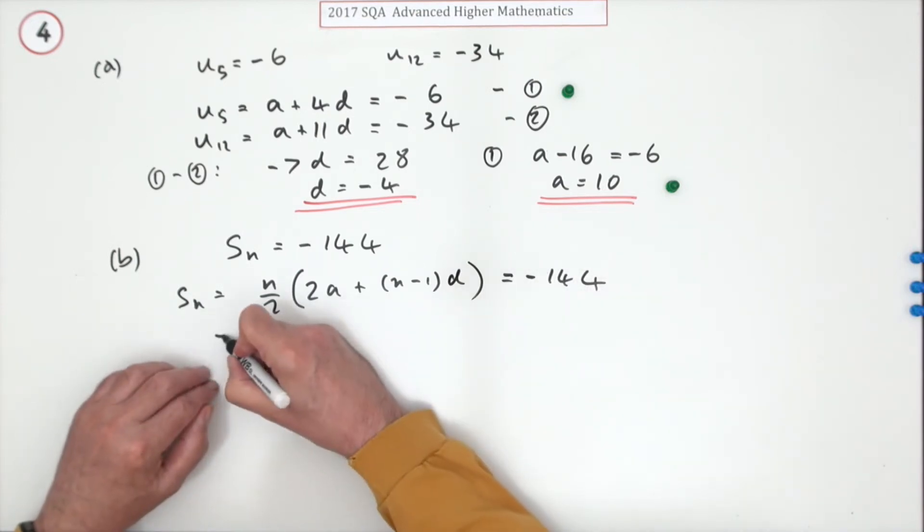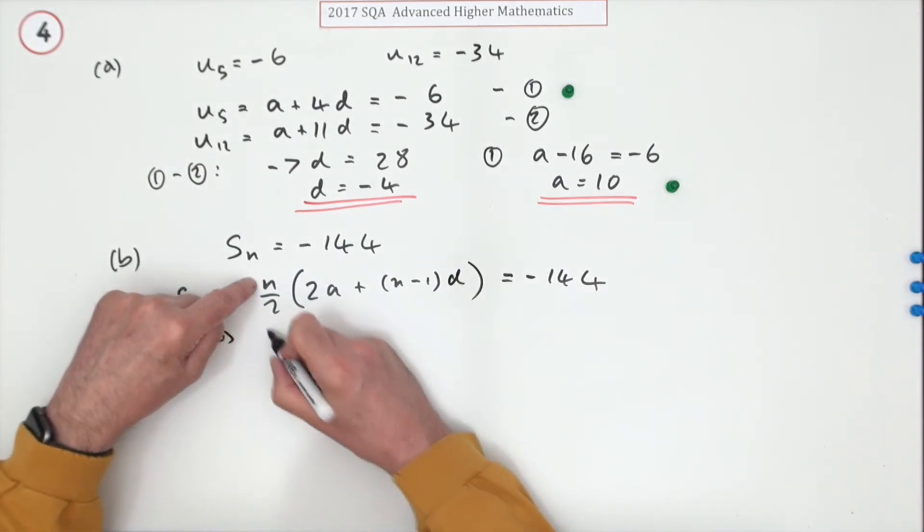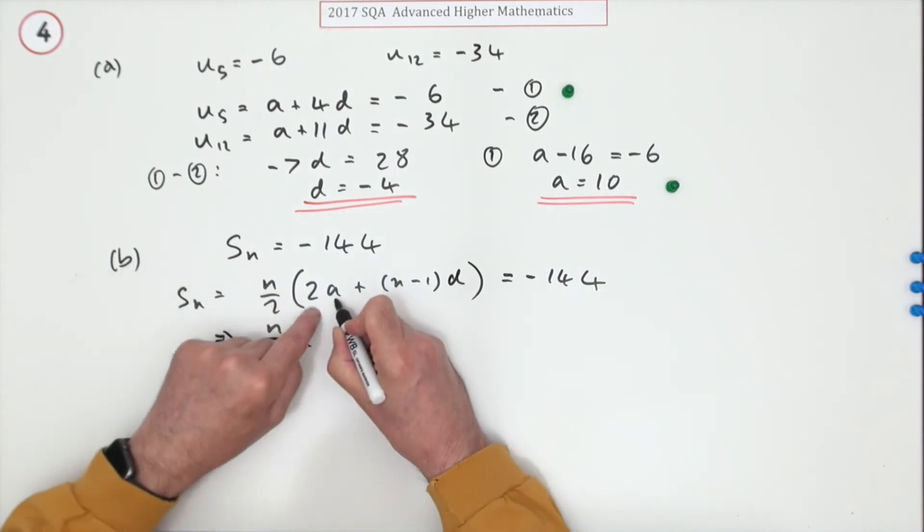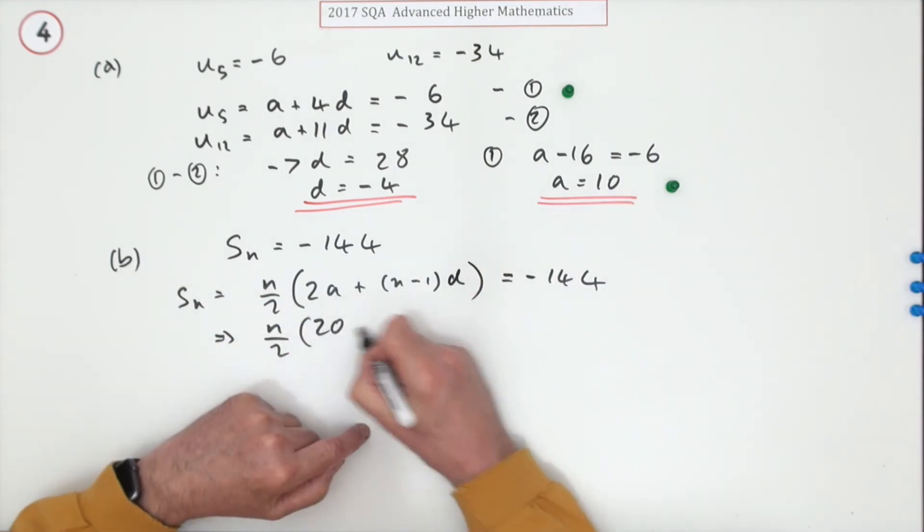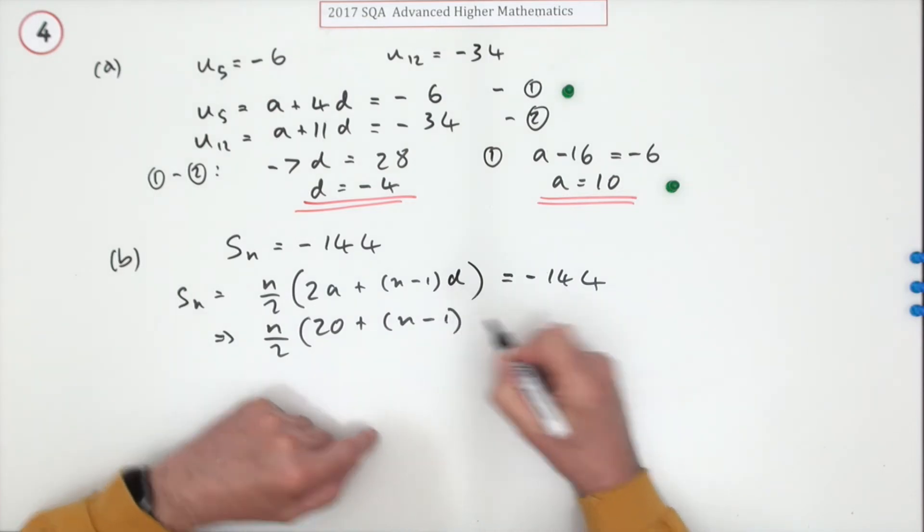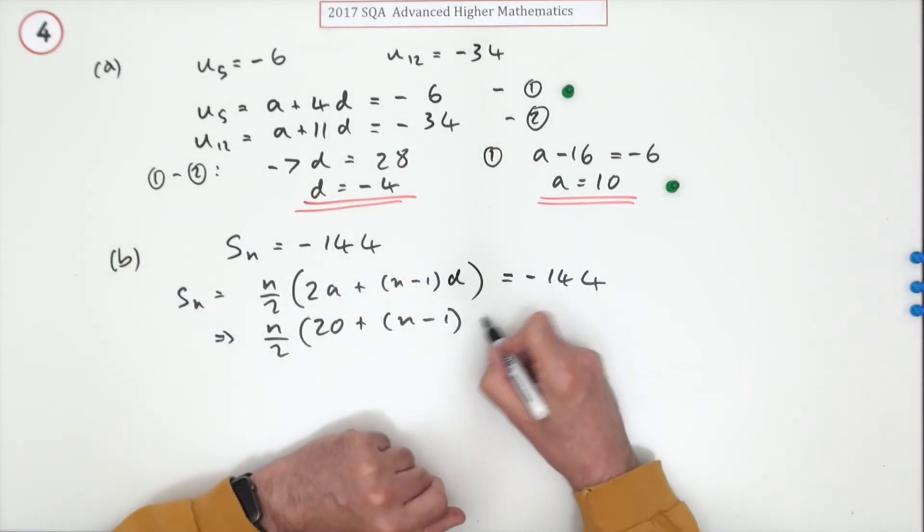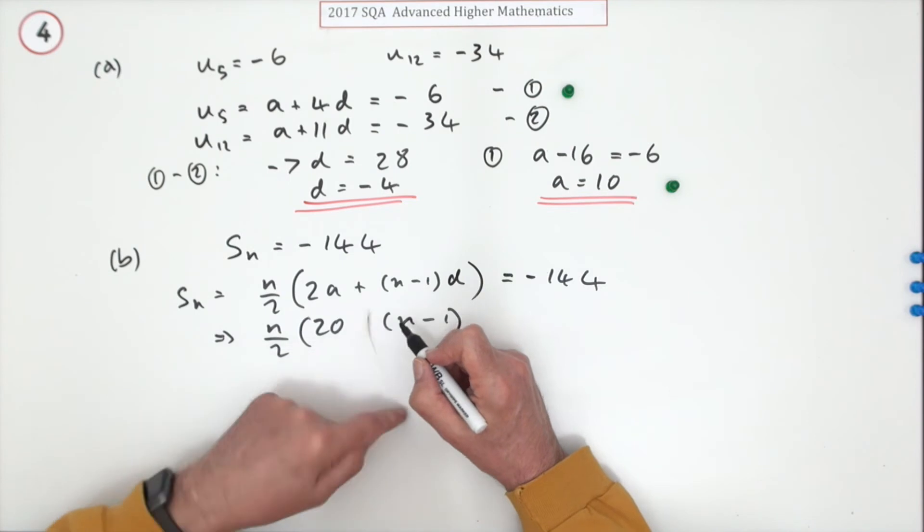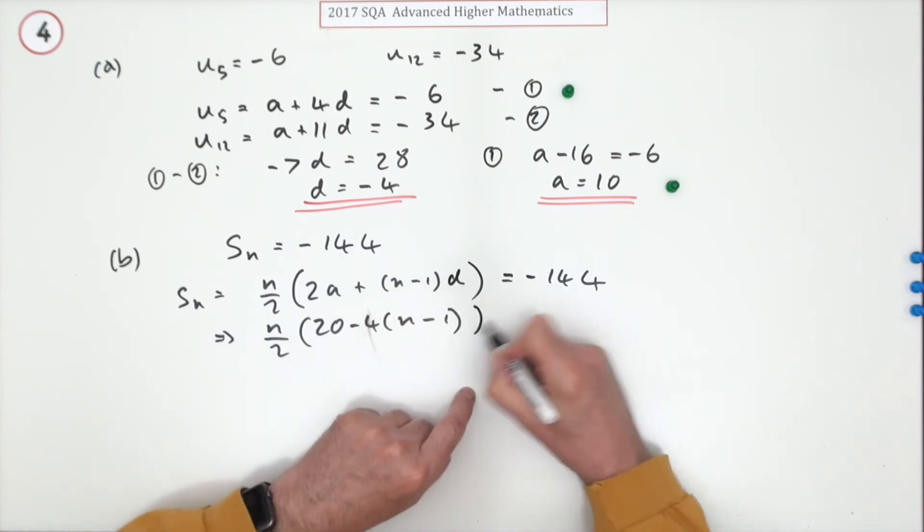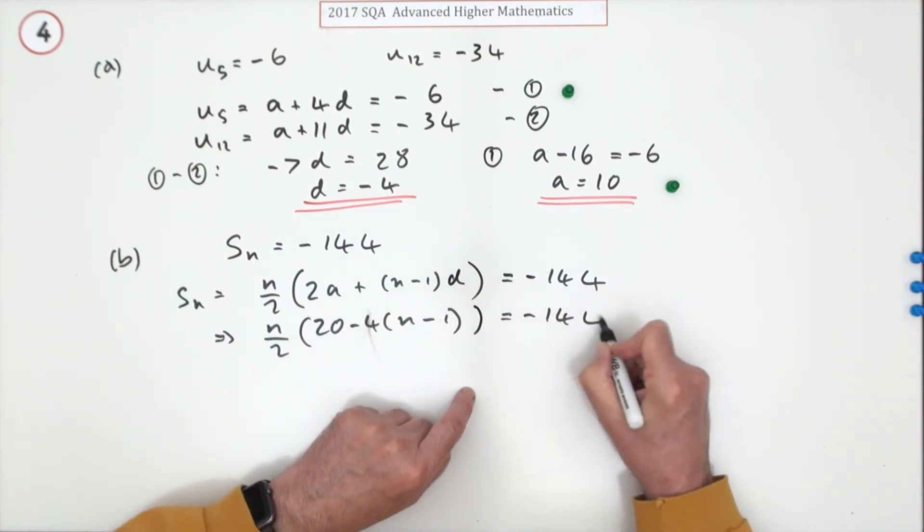That should come to negative 144. Putting in the numbers: don't know what n is, but a is 10, so that's a 20, plus n minus one lots of d is negative four. I think I'll just pop that at the front: minus four lots of that equals negative 144.